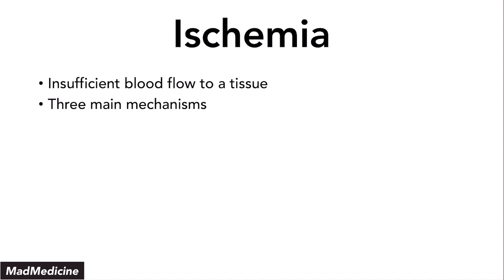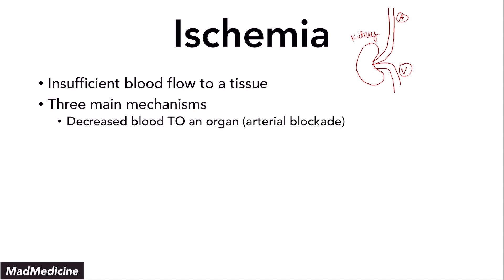Let's say here is your organ — for the sake of this example, we're going to use the kidney. You have blood coming to the kidney, which is the arterial supply, and blood leaving the kidney, which is your venous supply. The first way you can get ischemia is by decreasing blood going to an organ — arterial blockade. If we block the renal artery, the kidney will go through ischemia because you're not getting enough blood to the organ. The second mechanism is venous blockade — blocking blood going from the organ. If you block the renal vein, blood backs up, you run out of oxygen in the area, and the organ undergoes ischemia.